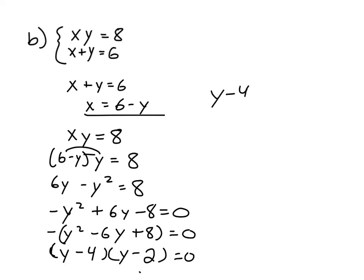What times what is positive 8, but then when you add them you get negative 6? So that would be minus 4 and minus 2. And that's the factorization. So y minus 4, set that equal to 0. And y minus 2, set that equal to 0. You get y equals 4. Y equals 2.